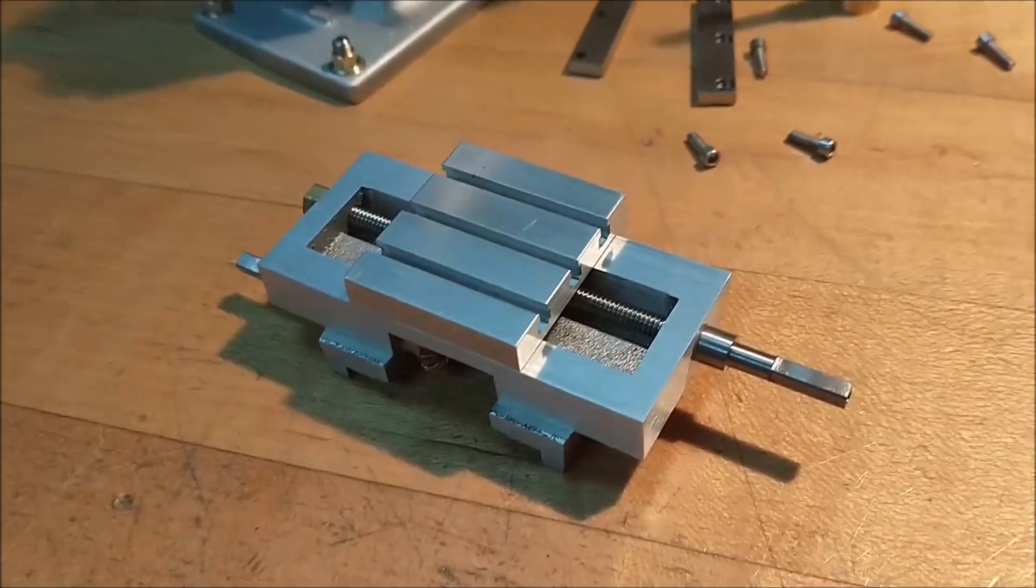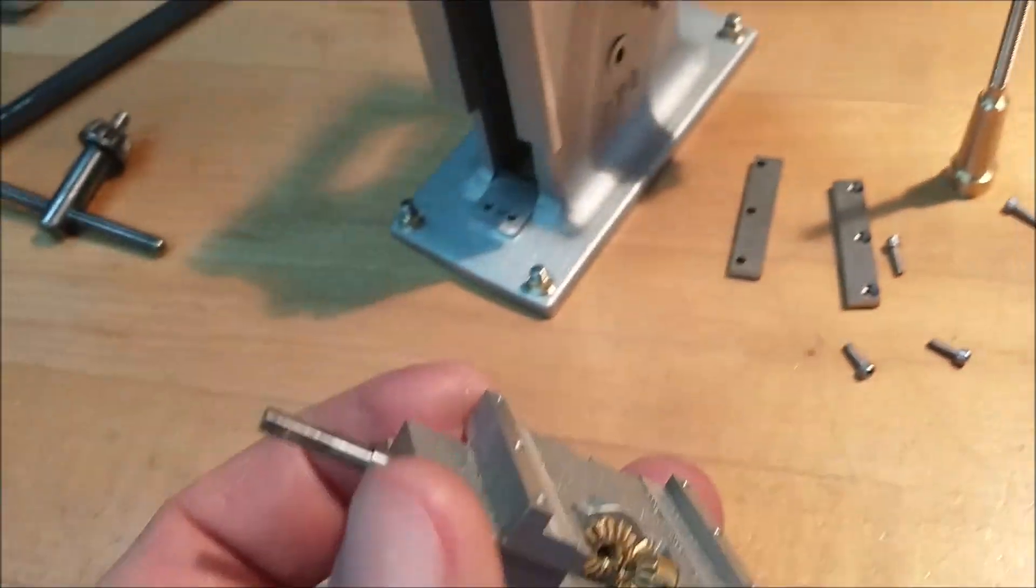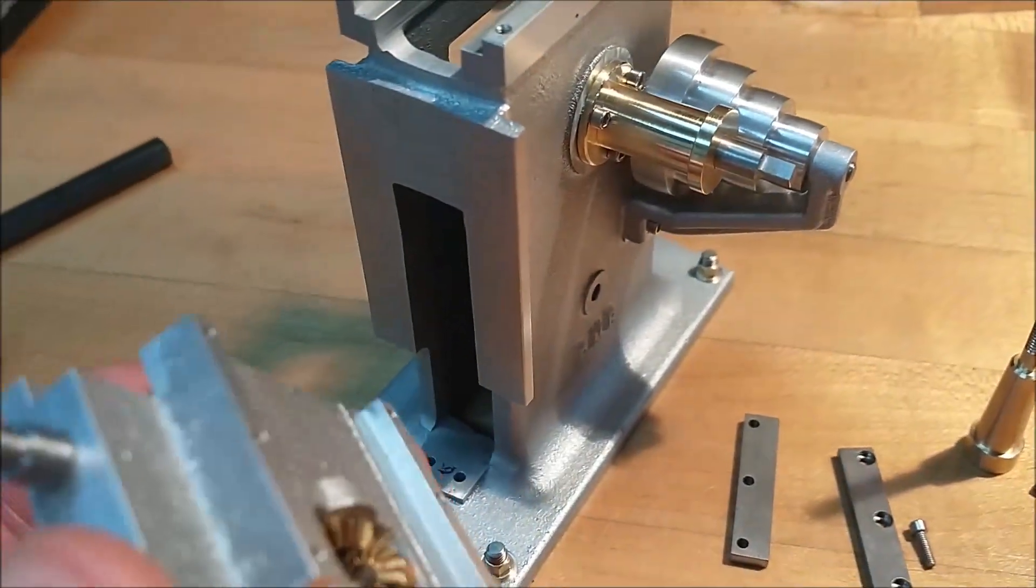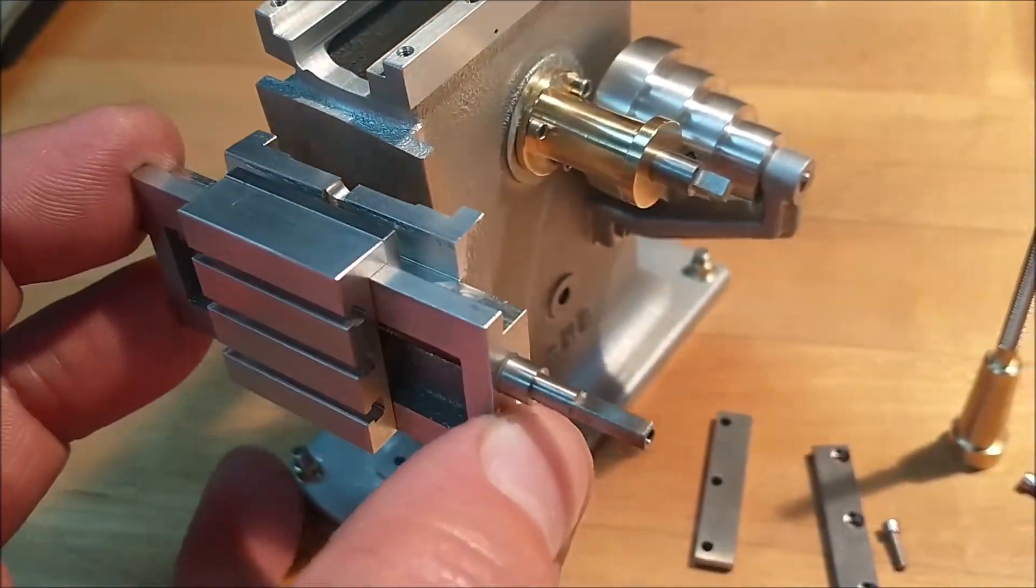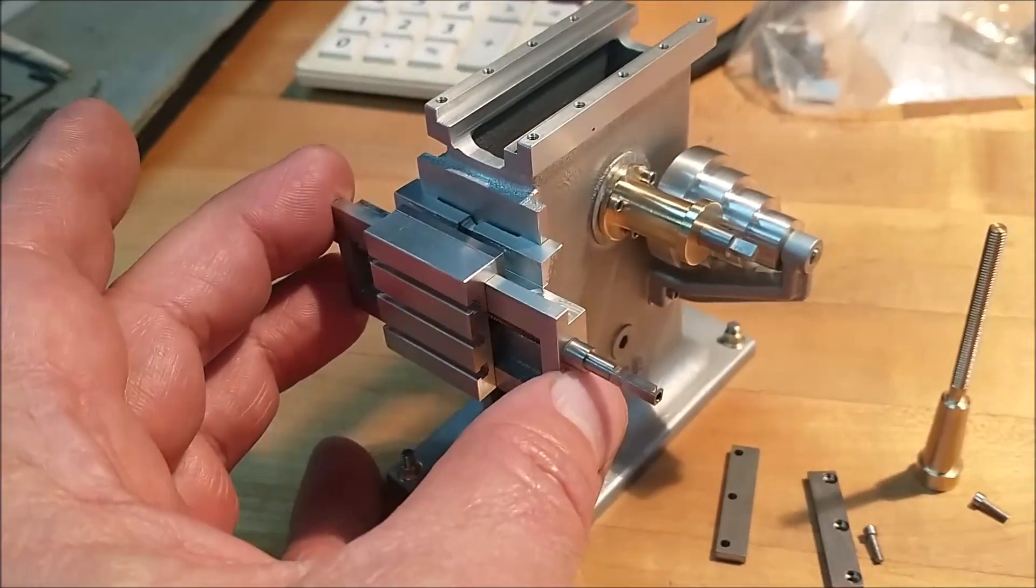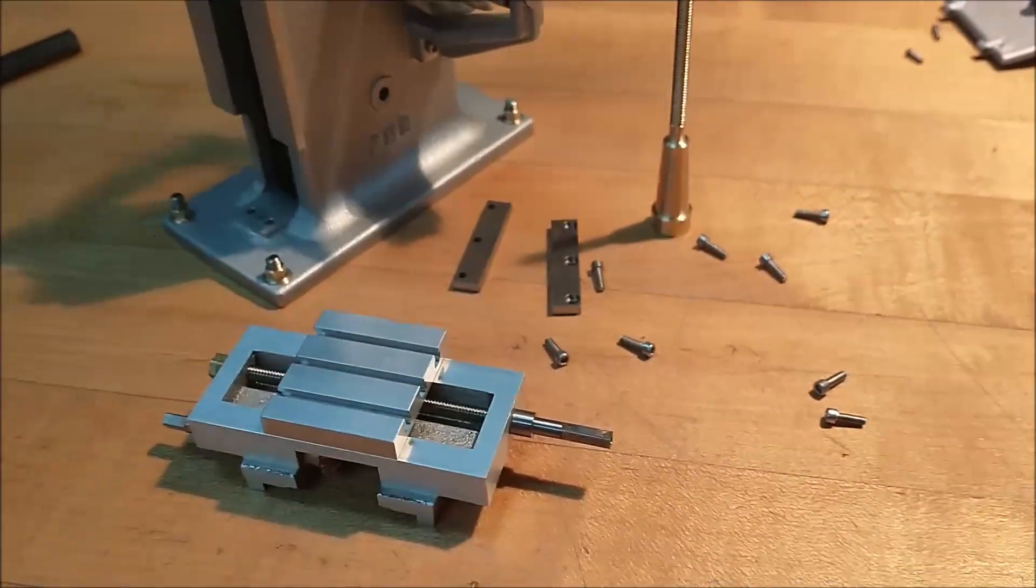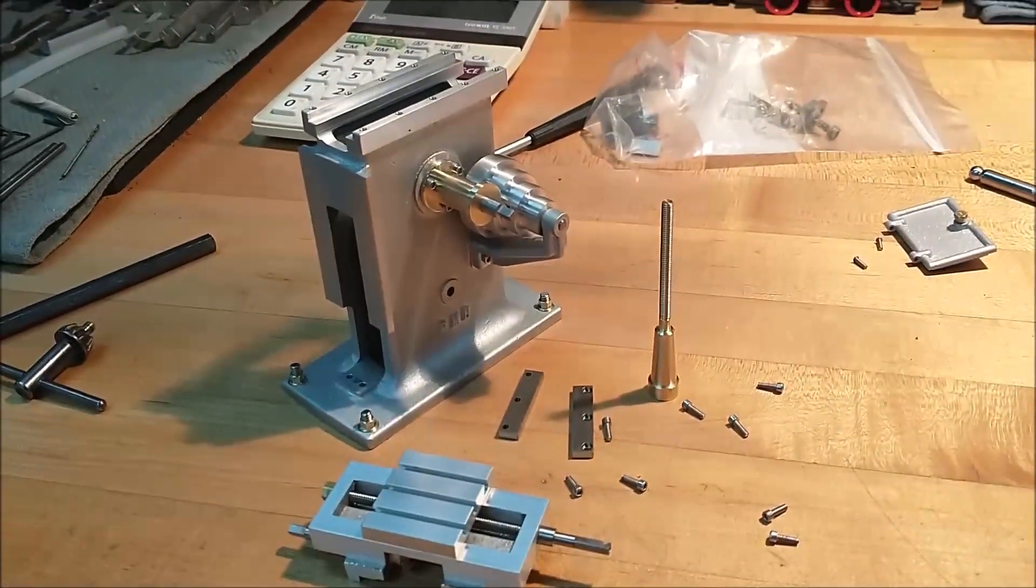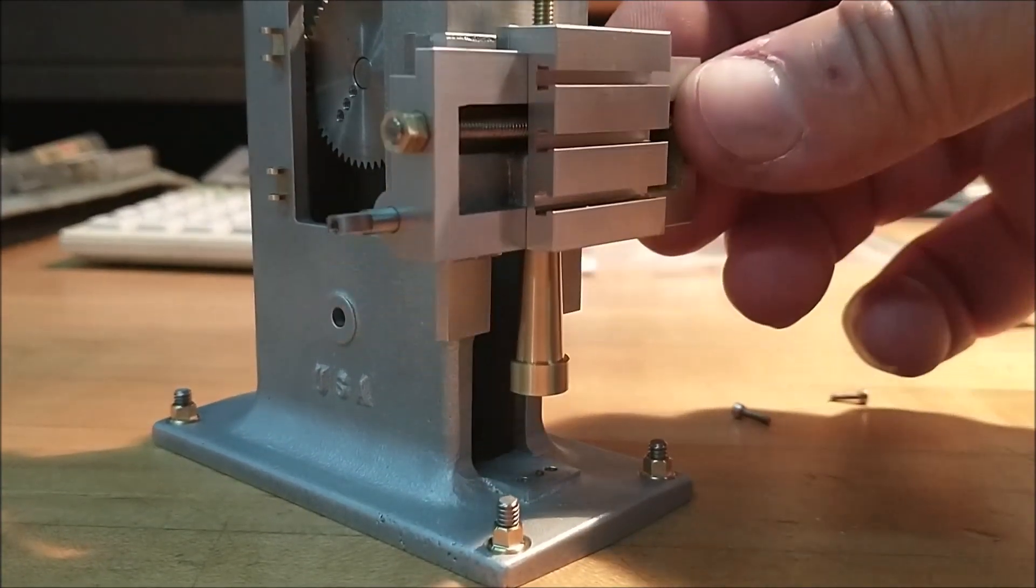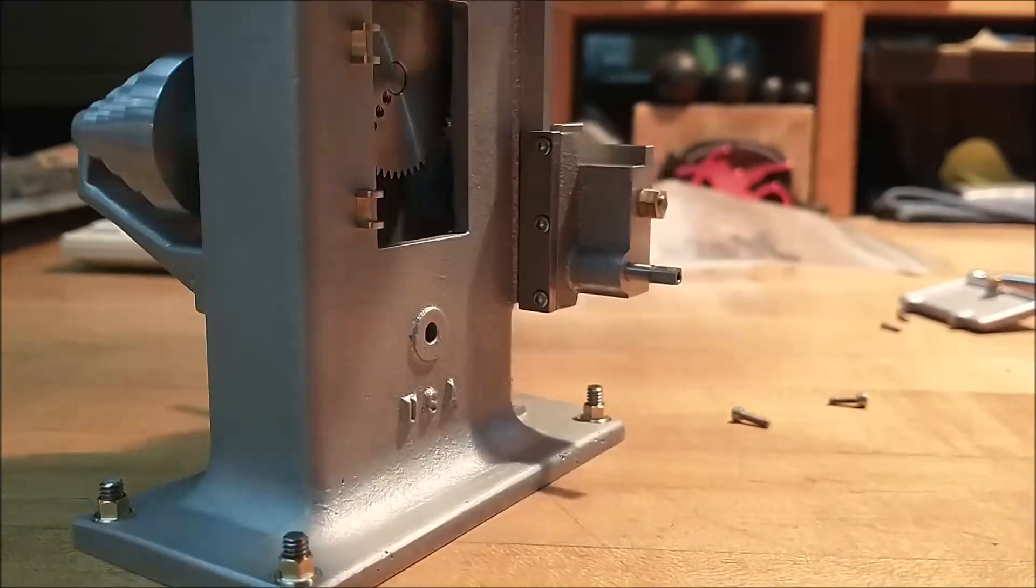With the internal gears complete it's time to put the table assembly on. This simply rides on the front vertical rails and is secured in place with six cap screws once the elevator mechanism is installed. The elevator screw itself is the last thing to be secured with the table all the way down to help with the alignment.